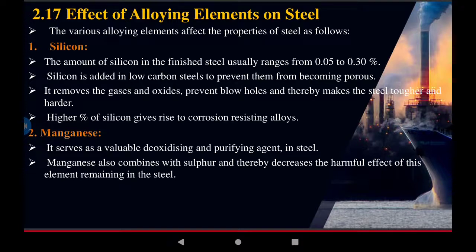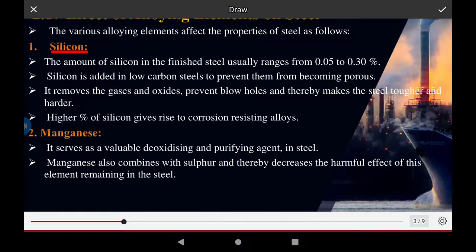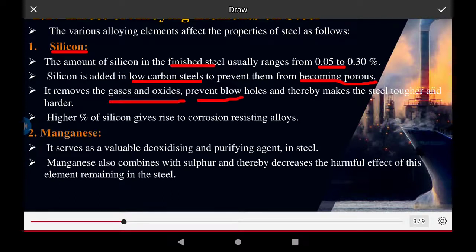The first alloying element is silicon. The amount of silicon in finished steel usually ranges from 0.05 to 0.30 percent. Silicon is added in low carbon steel to prevent it from becoming porous. It removes gaseous oxides, prevents blowholes, and makes the steel tougher and harder. Higher percentages of silicon give rise to corrosion-resisting alloys.